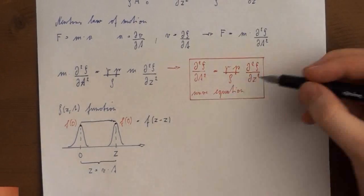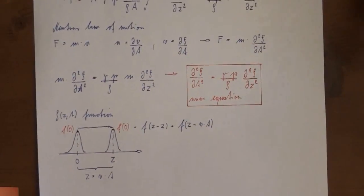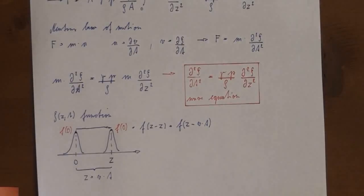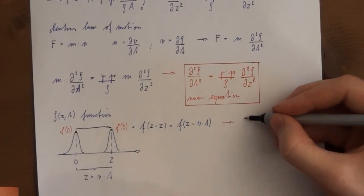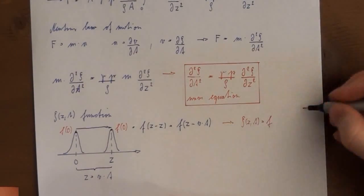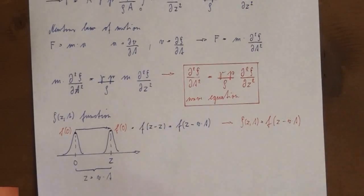Thus we expand f with z minus z. We already know that the distance equals velocity times time. So to arrive at the function zeta we merely substitute the second z by v times t.